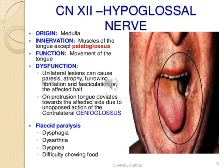The last cranial nerve is the hypoglossal nerve. Its nucleus is in the medulla oblongata, and it innervates all the muscles of the tongue except palatoglossus. The function of the hypoglossal nerve is movement of the tongue. Dysfunction in a lower motor neurone lesion can cause paralysis, atrophy, fibrillation, or fasciculation of the tongue. During protrusion, since the tongue muscles are pushing muscles, the tongue deviates towards the paralyzed side.